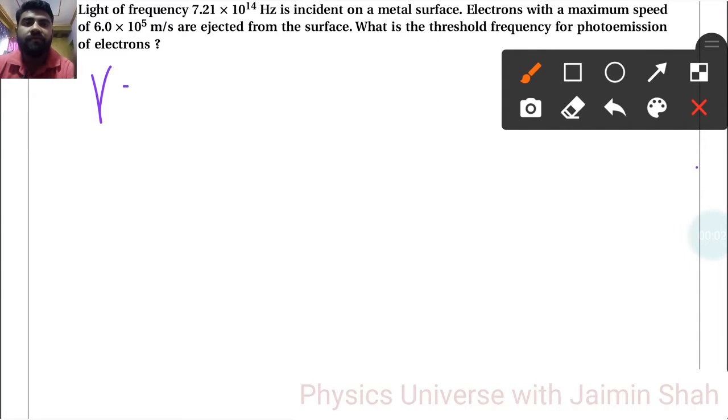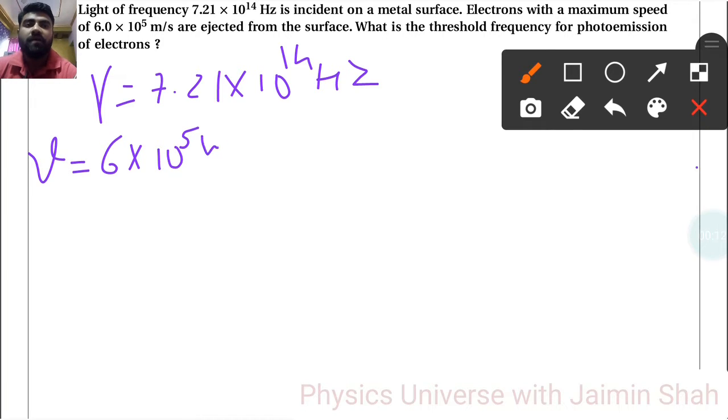Light of frequency ν = 7.21 × 10¹⁴ Hz is incident on a metal surface. Electrons with a maximum speed v = 6 × 10⁵ m/s are ejected from the surface. What is the threshold frequency ν₀ for photoemission of electrons?